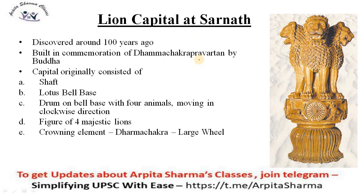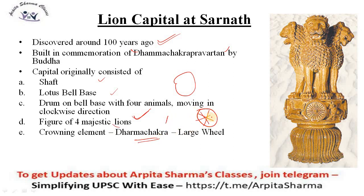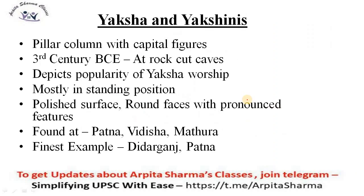Discussing the lion capital at Sarnath: the lion pillar capital at Sarnath was discovered around 100 years ago and was built in commemoration of Dharm Chakra Pravartan by Buddha. The capital originally consisted of a shaft, a lotus bell base, a drum on the bell base with four animals moving in clockwise direction, four majestic lions, and the crowning element was the Dharm Chakra — the large wheel or wheel of life. When we adopted it as our national emblem, we made some edits to the original.